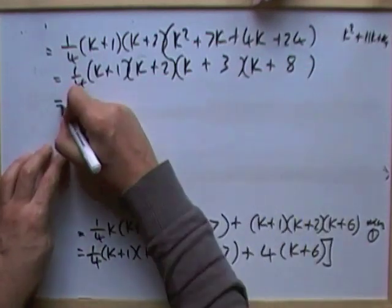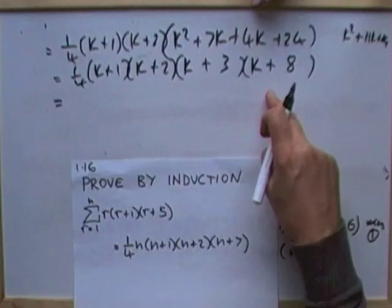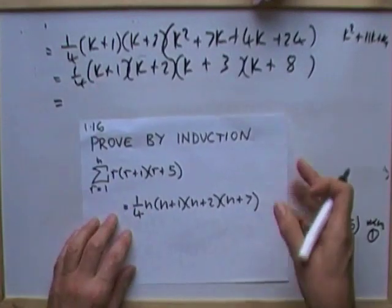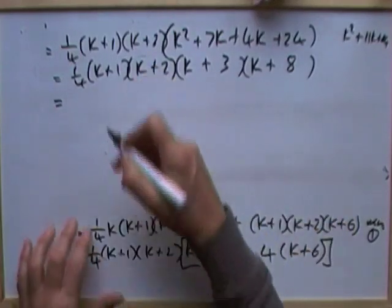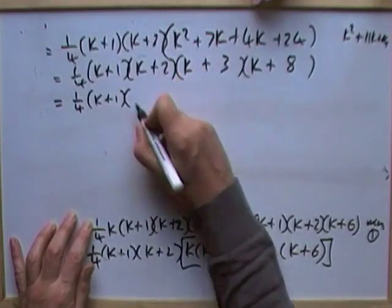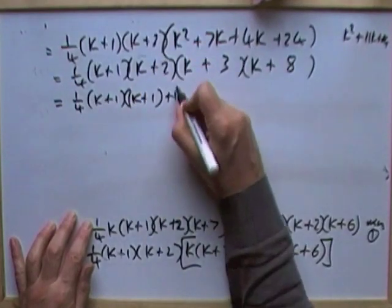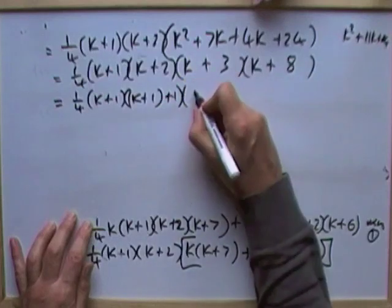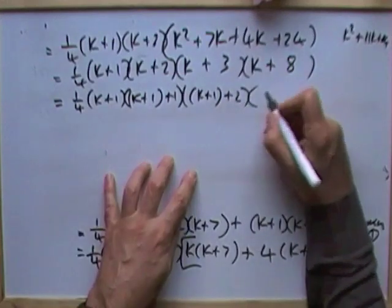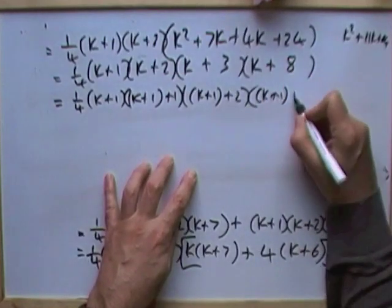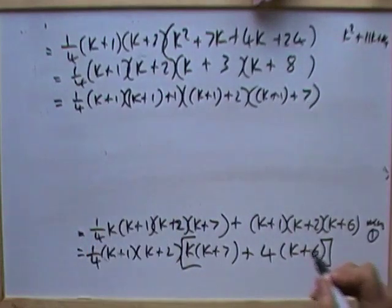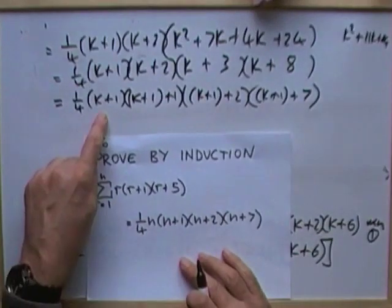The final step is to rearrange that into the required formula, where the n's are replaced by k+1s. That's easy to achieve — you can make every k a k+1. So (k+1) stays as is, making the next factor (k+1)+1 = k+2, then (k+1)+2 = k+3, and (k+1)+7 leaves a 7. This is precisely the formula that was required to be demonstrated.